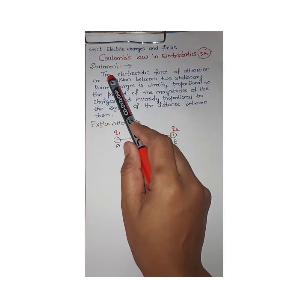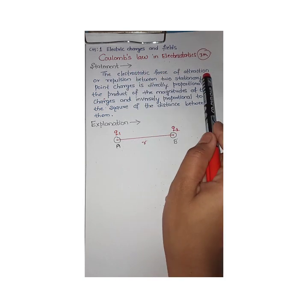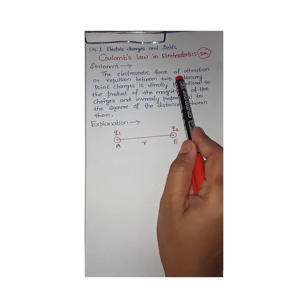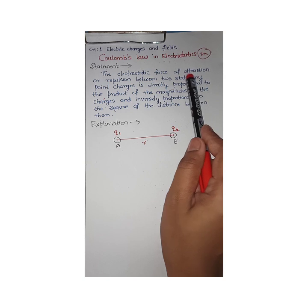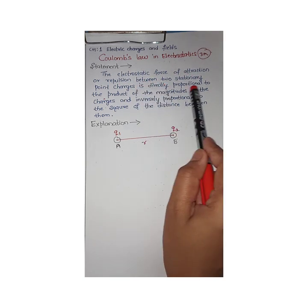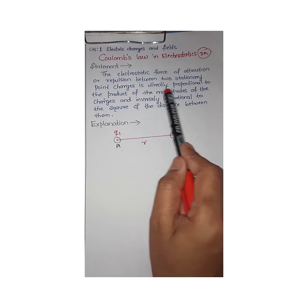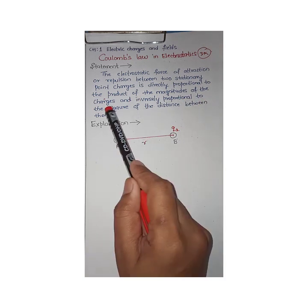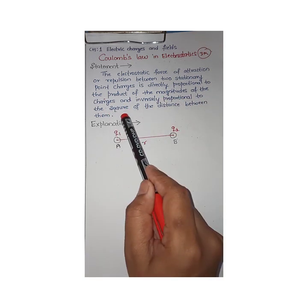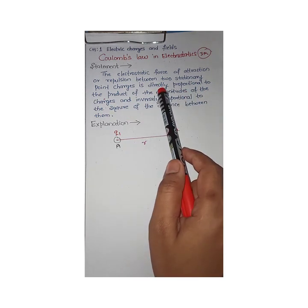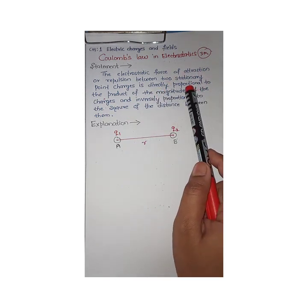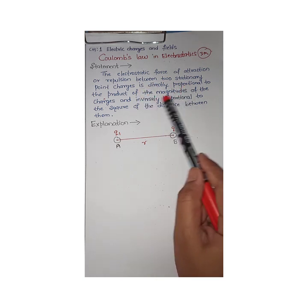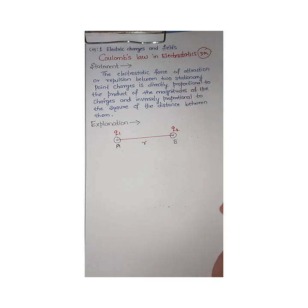The law states: the electrostatic force of attraction or repulsion between two stationary point charges is directly proportional to the product of the magnitudes of the charges and inversely proportional to the square of the distance between them. This statement is very similar to Newton's Universal Law of Gravitation, except here we have charges instead of masses.